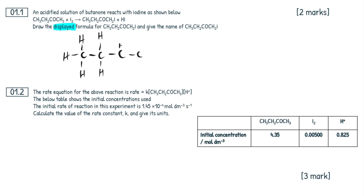This C=O right here is a carbonyl ketone, so I'm going to show that. There are two hydrogens here, and then there's a good old iodine on the end — the iodide right here. That's our displayed formula, not too bad.